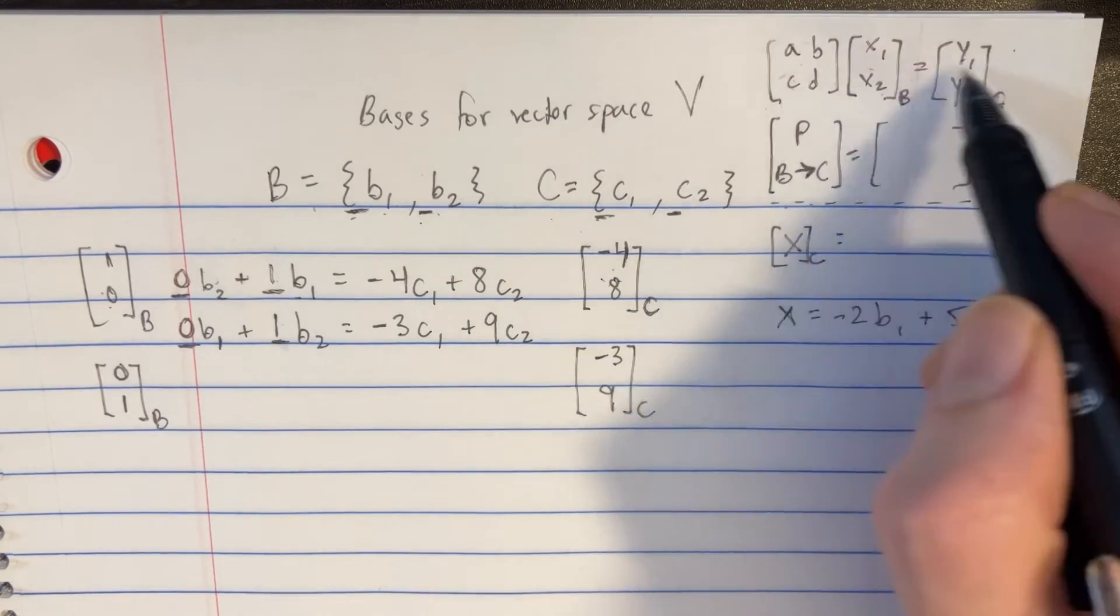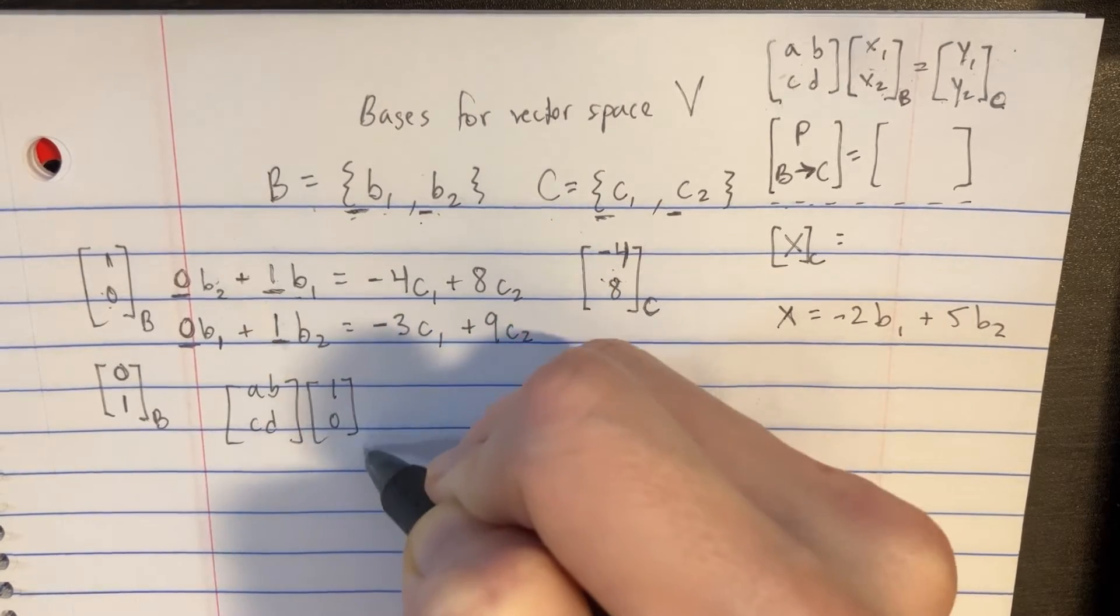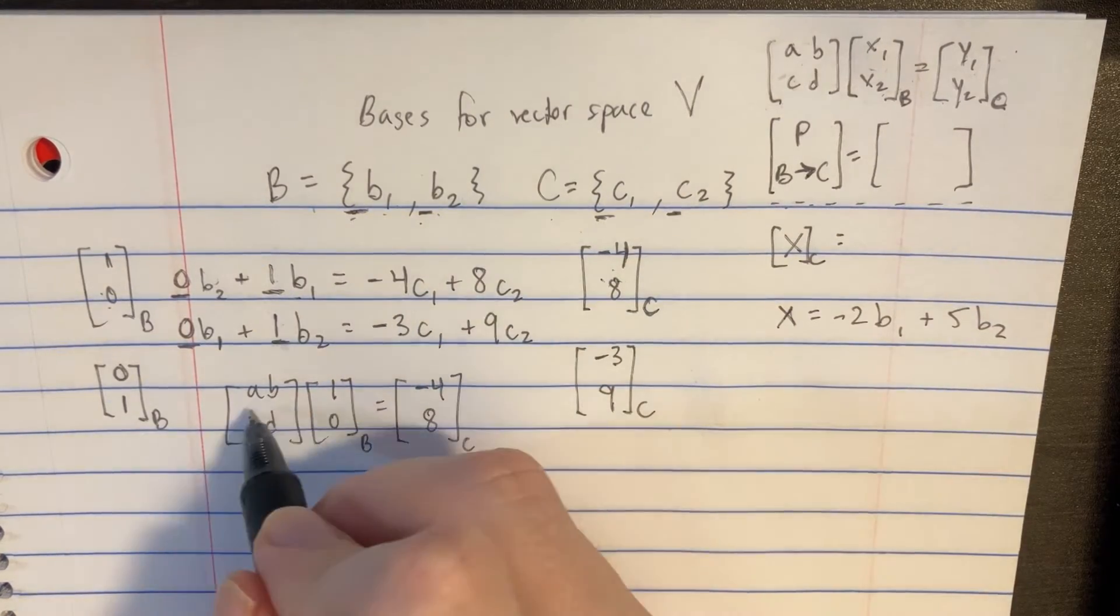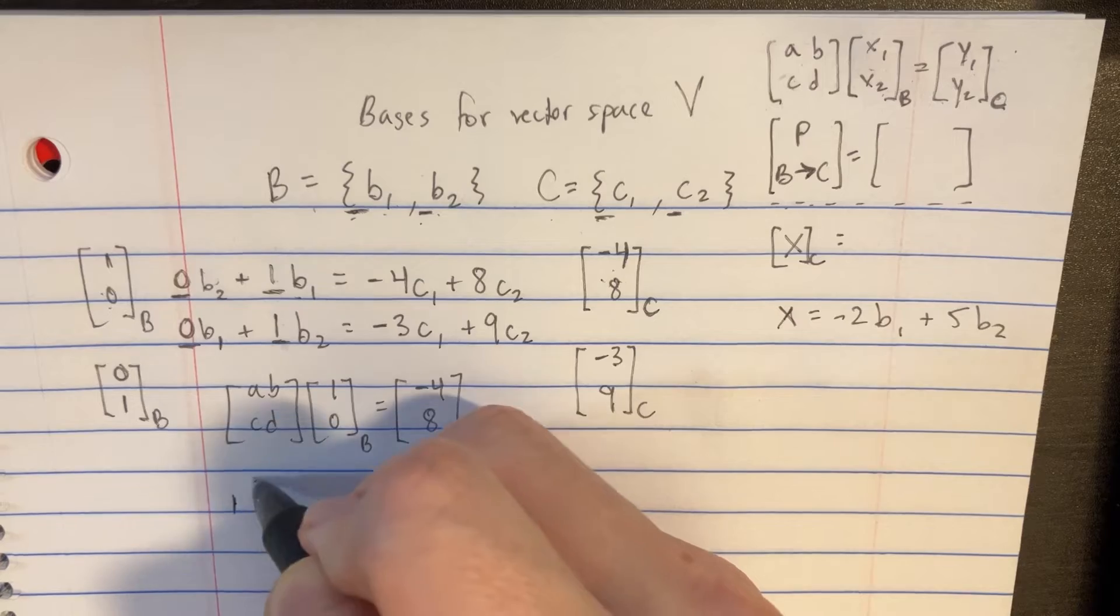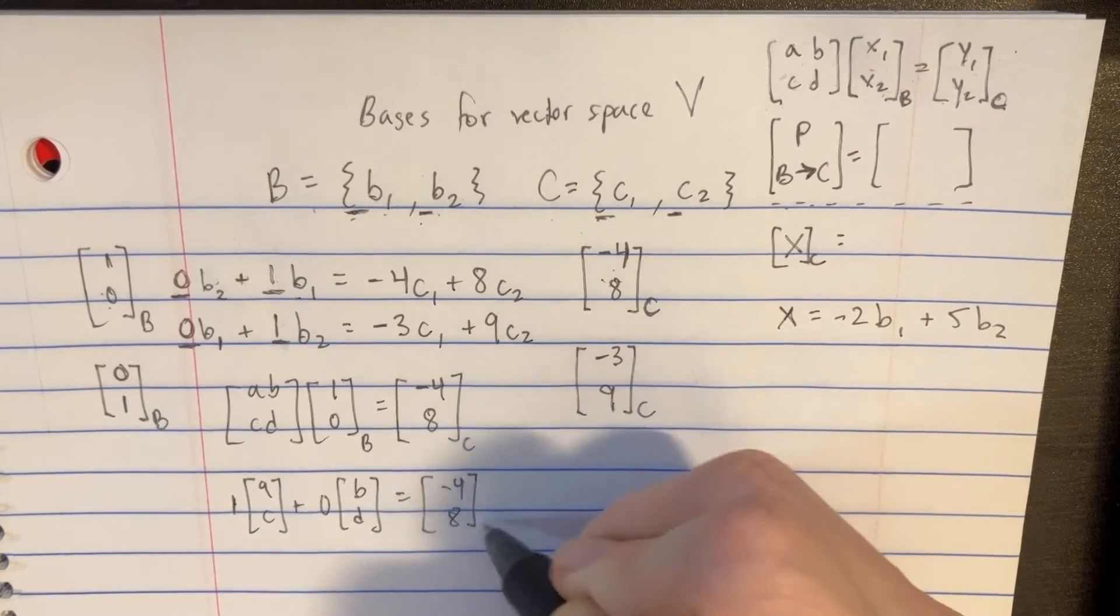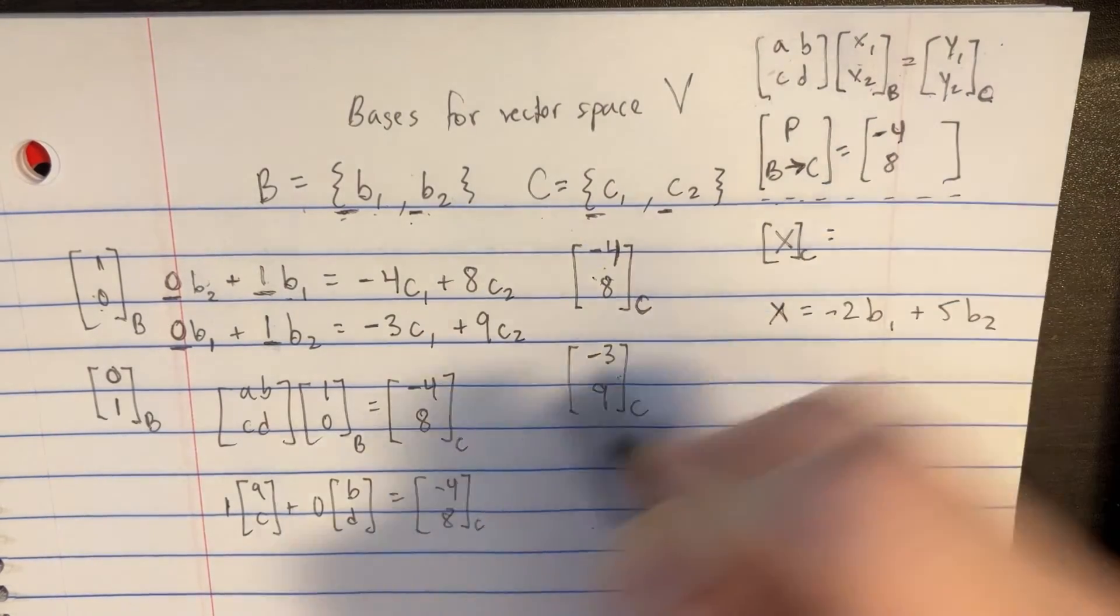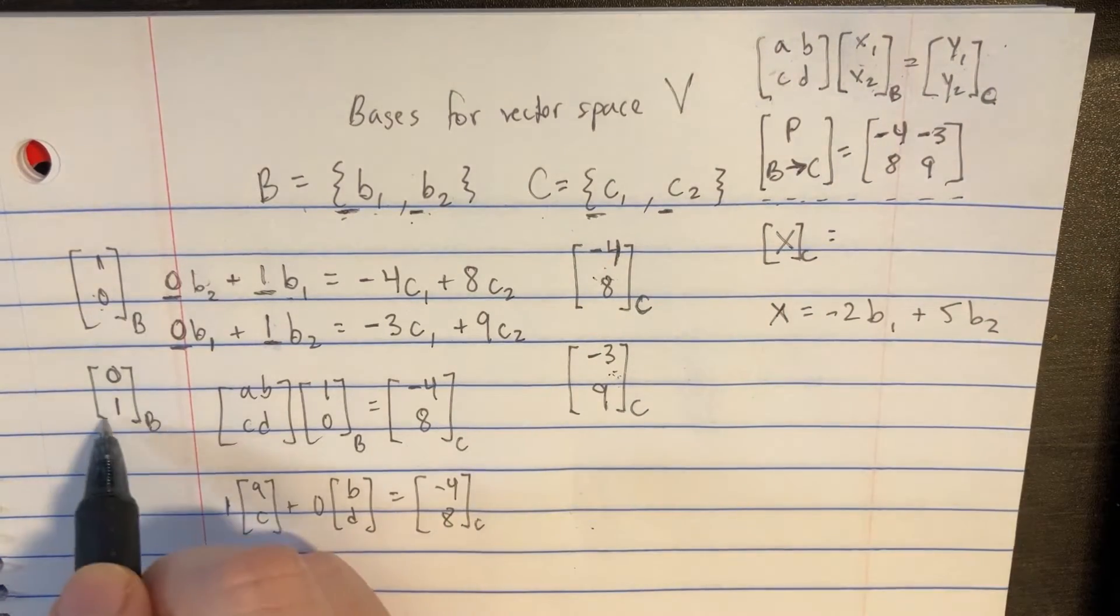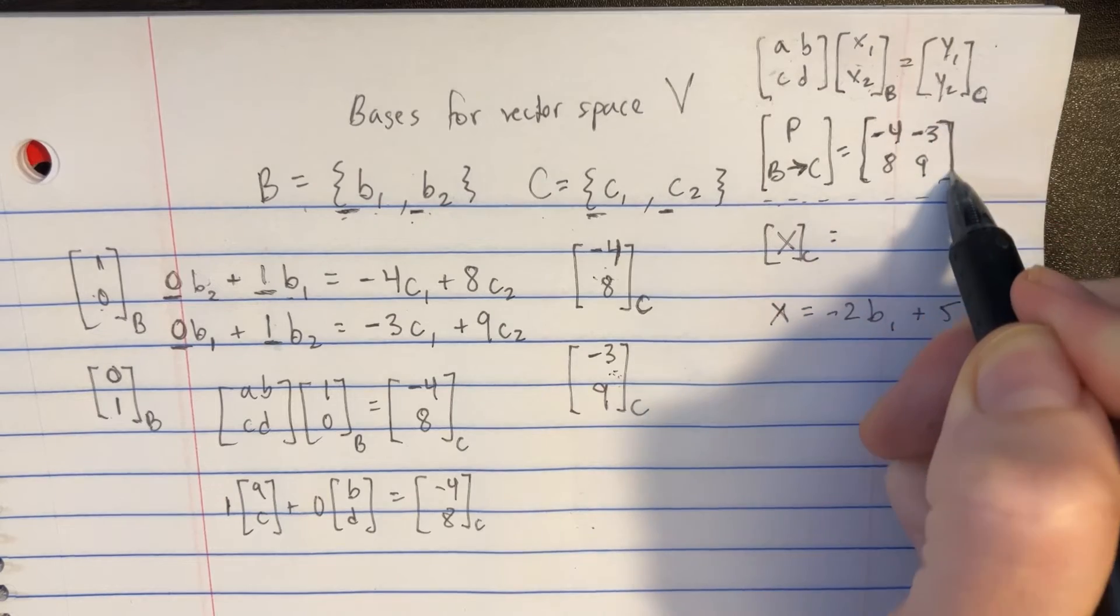Now we can plug these vectors into this equation, and we'll notice something like this A, B, C, D, and then we have 1, 0 using the Bs. That's going to be equal to negative 4, 8 using the Cs. And we can clearly see how A and C is equal to negative 4 and 8 because 1 times AC plus 0 times BD is going to be equal to negative 4, 8. So we've got the left side of the matrix. Negative 4 and 8 is the left side, and naturally this would be the right side. So let's just put negative 3 and 9 right there. We got the first part of the problem. We have the matrix that we're looking for.